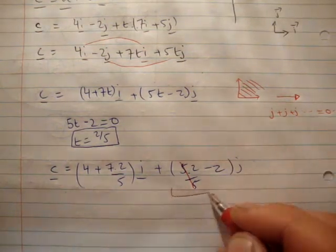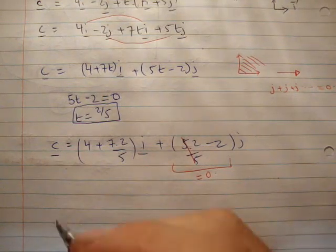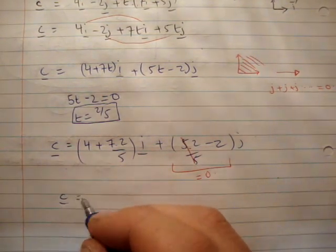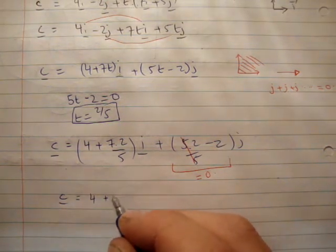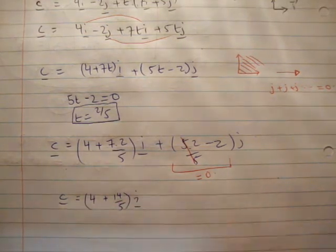This here quite clearly goes to 0. Therefore, if you do the algebra, it goes to 0. Therefore, c is equal to 4 plus 14 over 5 i-hat.